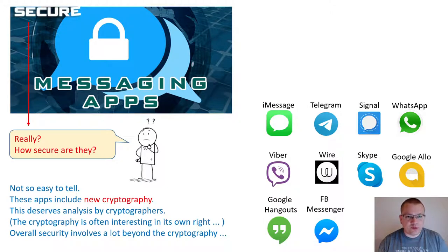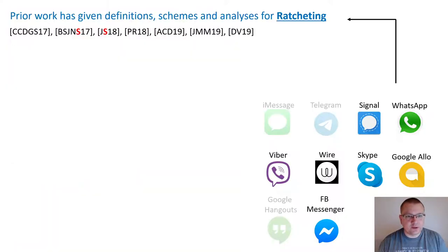It is not so easy to tell. These applications include new cryptography which deserves analysis by cryptographers, and of course the overall security involves a lot beyond cryptography. Prior work has given definitions, schemes, and analysis for a technique called ratcheting, which is widely used in instant messaging.